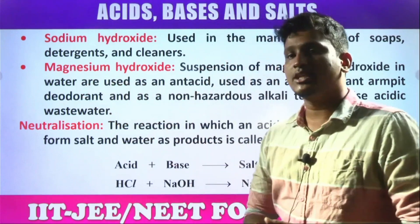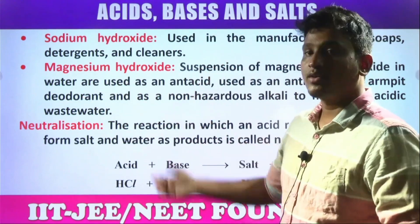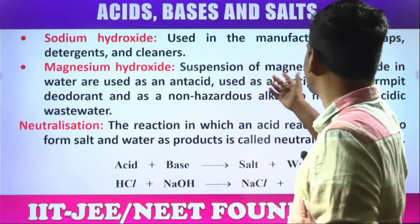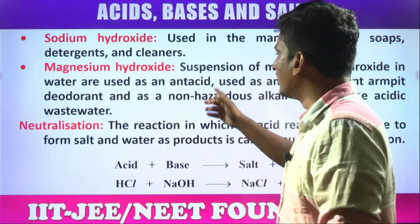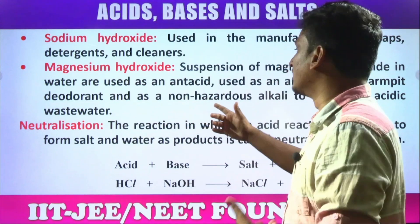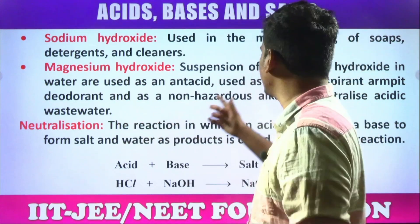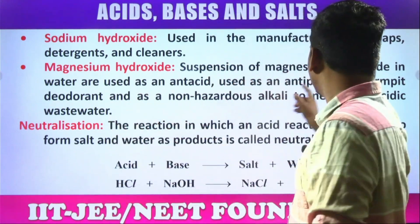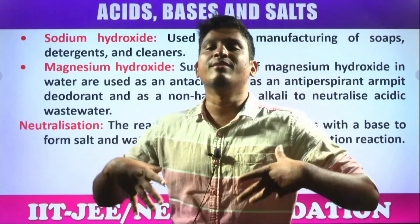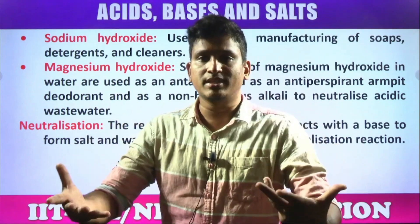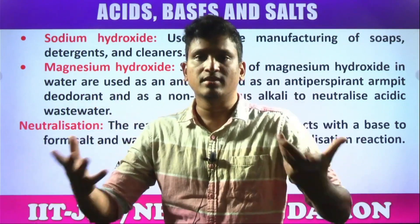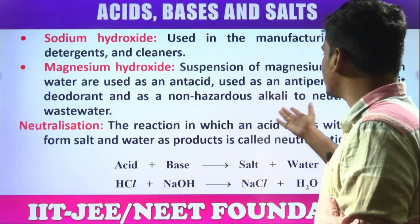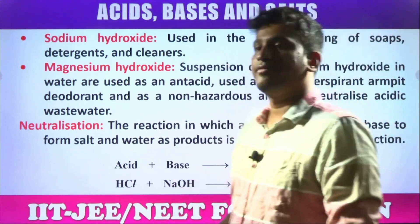Magnesium hydroxide Mg(OH)₂ is also called milk of magnesia. It is mainly used in antacid tablets — suspensions of magnesium hydroxide in water are used as antacid tablets to relieve indigestion pain. It is also used as an anti-perspirant armpit deodorant to avoid sweat, and as a non-hazardous alkali to neutralize acidic wastewater.